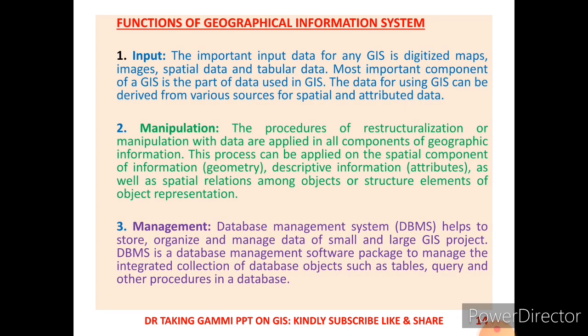I would like to discuss some functions of the Geographical Information System. Number one is input — important input data for GIS includes digitalized map images, spatial data, and tabular data. The most important component of GIS is the data, which can be derived from various sources for spatial and attributed data. Number two is manipulation — the procedure of re-structuralization or manipulation of data applied in all components of geographic information.